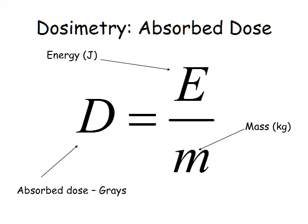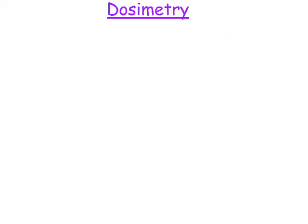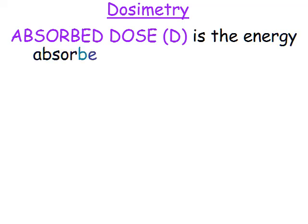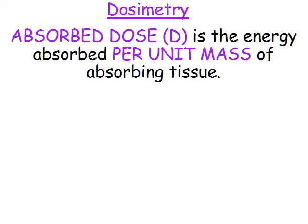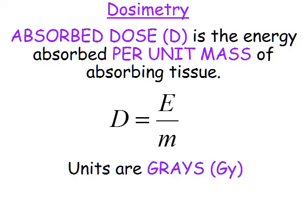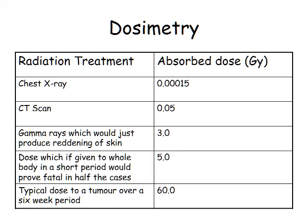The absorbed dose is the energy absorbed per unit mass, or per kilogram of tissue, with units in grays. One gray is the same as one joule per kilogram.